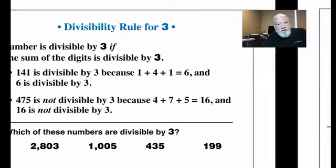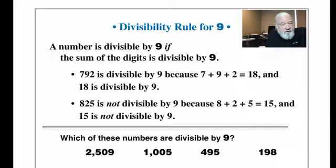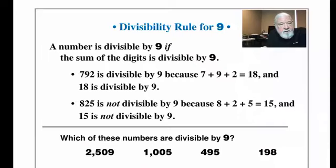Three shares its rule with nine — the only difference is: a number is divisible by nine if the sum of the digits is divisible by nine. No other numbers have this digit-sum property except three and nine. For 792: 7 + 9 + 2 = 18, which is divisible by nine, so 792 is divisible by nine. For 825: 8 + 2 + 5 = 15, not divisible by nine — but notice it is divisible by three. Just as some numbers are divisible by five but not ten, some are divisible by three but not nine.